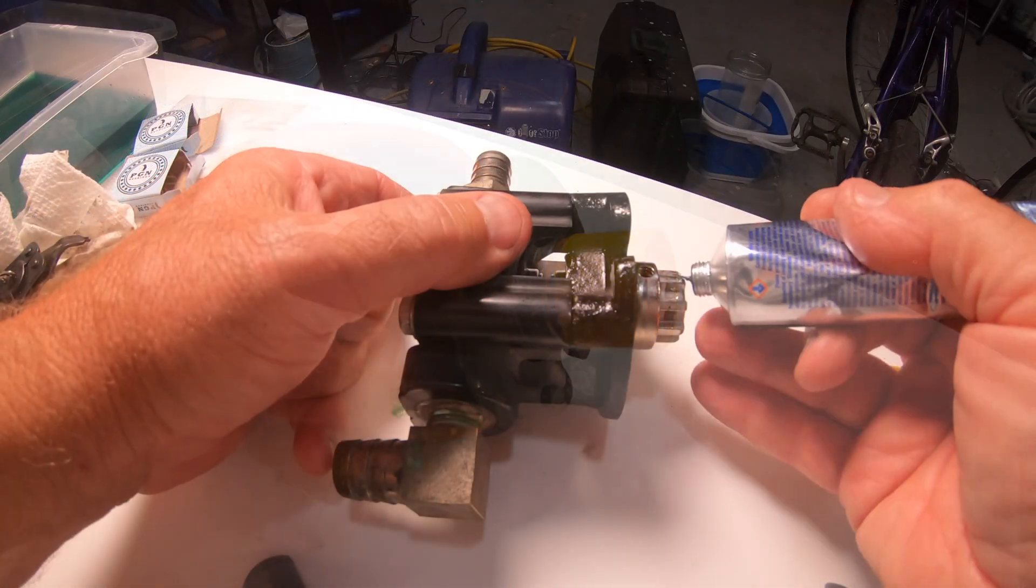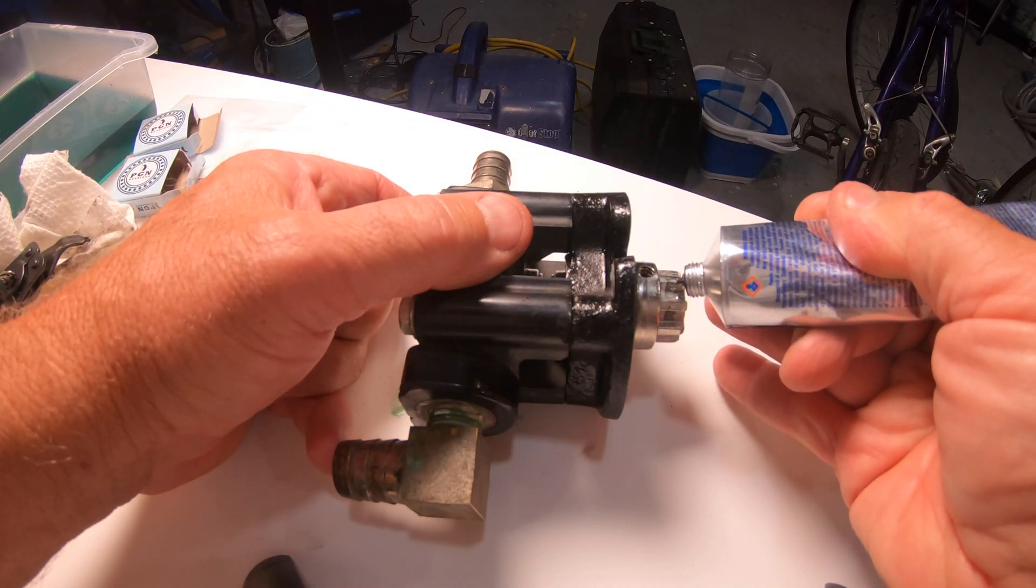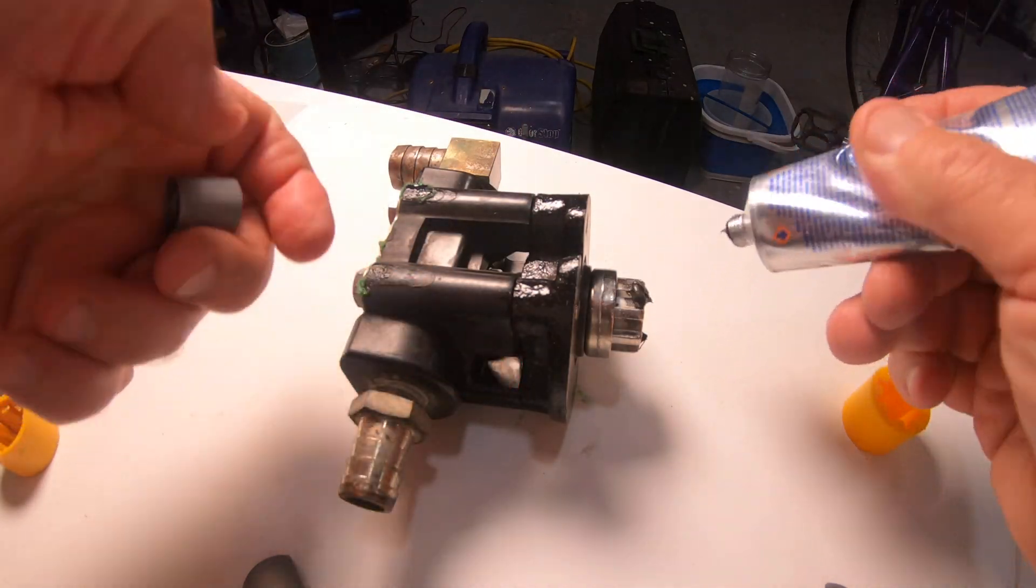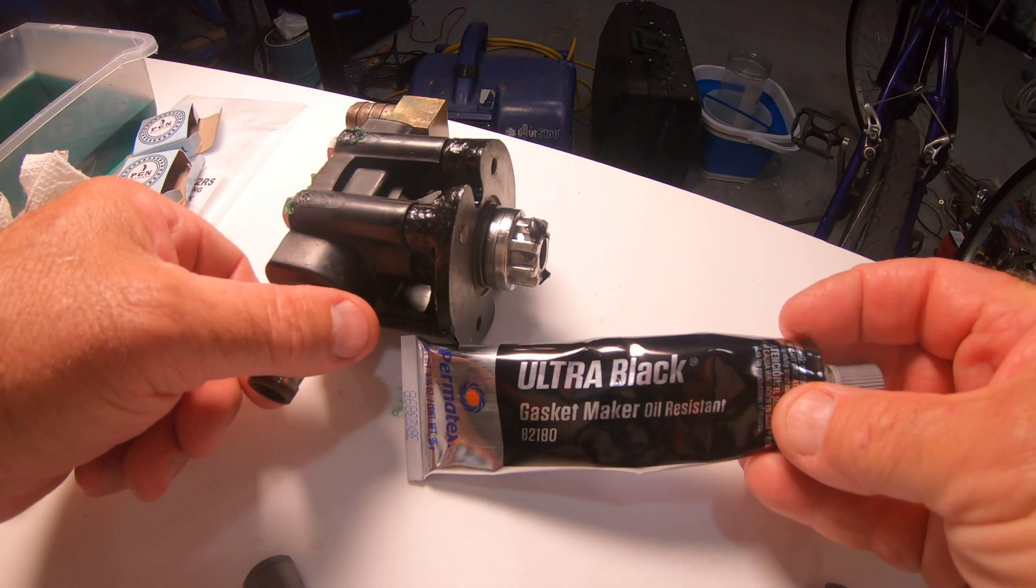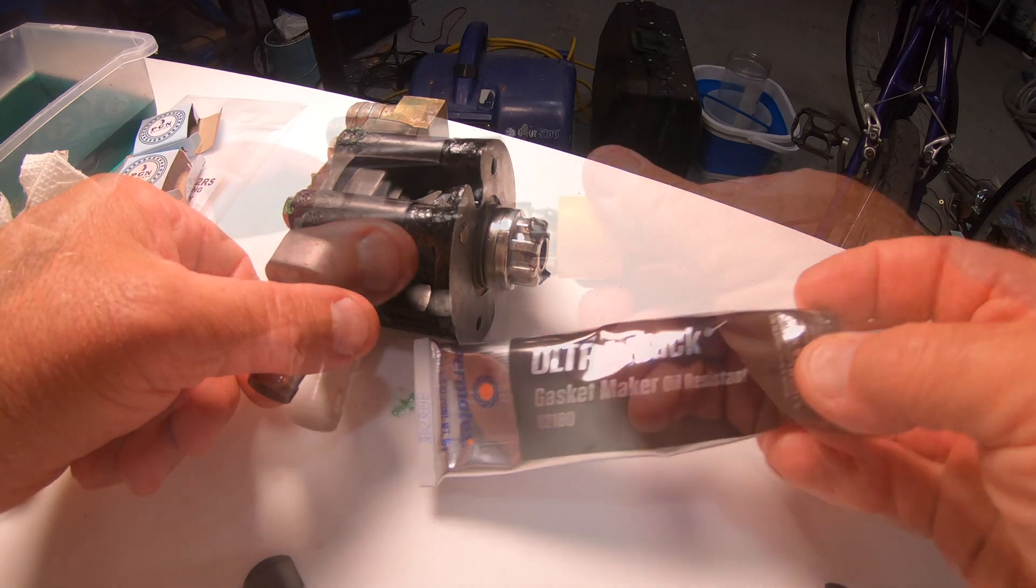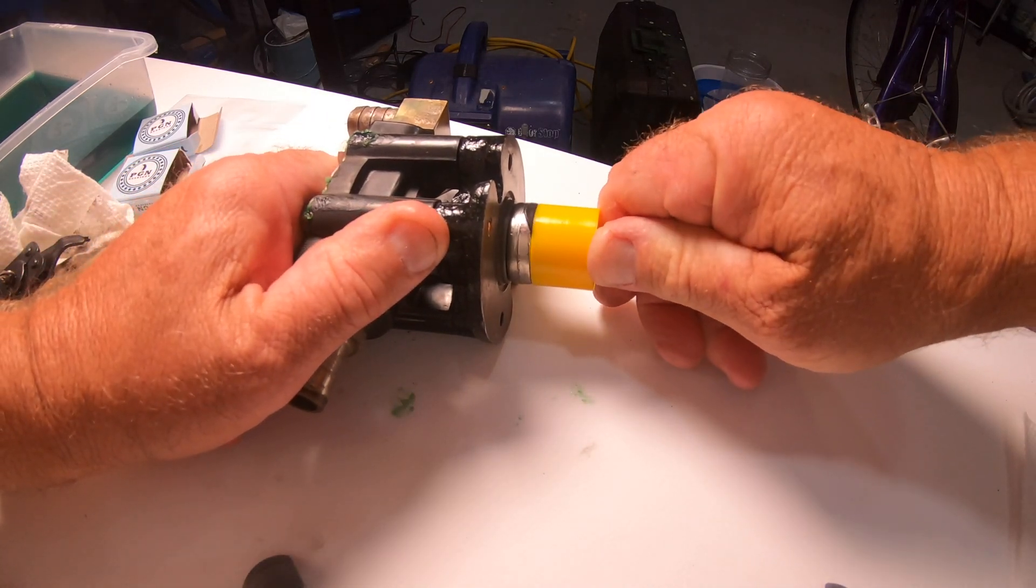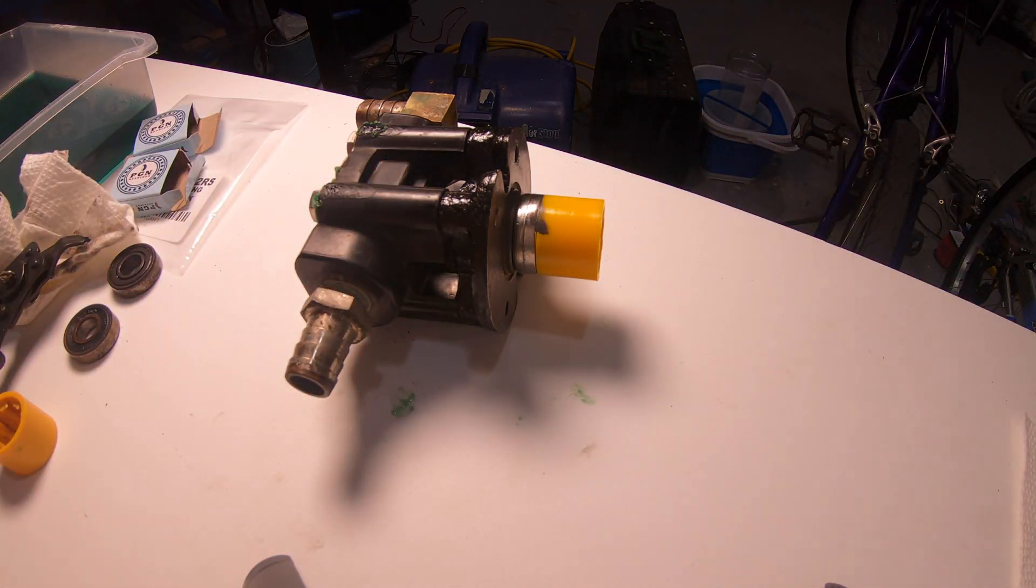So I just put a little dab of black RTV gasket maker on two of the teeth and then just slid the coupling on there, just to keep it from falling off. I don't think it's going to hurt anything, and it eliminates having to take the generator body apart if that little coupling falls off.